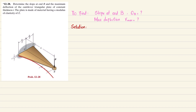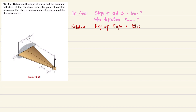Due to this load, the beam will bend, and we will have a maximum deflection at point B as well as maximum slope theta B at that point. So let's start with the solution. The equation of slope and elastic curve is derived using the formula: E·I · d²v/dx² = M(x).